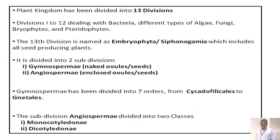The Plant Kingdom has been divided into a total of 13 divisions. Divisions 1 to 12 deal with the Bacteria and different types of algae, fungi, bryophytes, and pteridophytes. The 13th division is named the Embryophyta Siphonogamia, which includes all seed-producing plants. The Embryophyta Siphonogamia may be divided into two subdivisions: Gymnospermia, meaning naked ovules or naked seeds, and Angiospermia, meaning the seeds are enclosed ovules or seeds. The Gymnospermia has been divided into seven orders from Cycadophycales to Nittales.